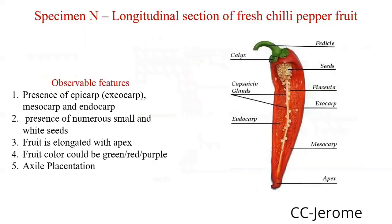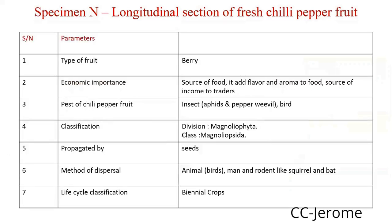Longitudinal section of a fresh chili pepper: presence of epicarp, presence of numerous small and white seeds. If the fruit is elongated with an apex, the color could be green, red or purple, and it has axile placentation. Parameters include the type of food, economic importance, method of propagation, method of dispersal, and life cycle classification. Look at the screen and identify.